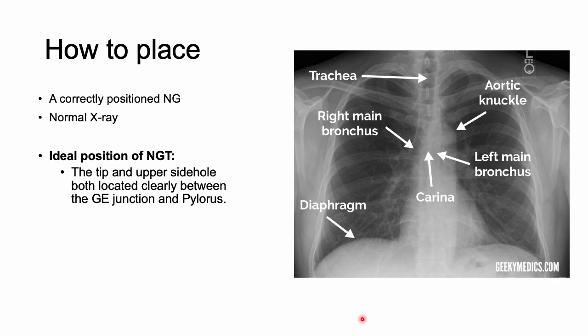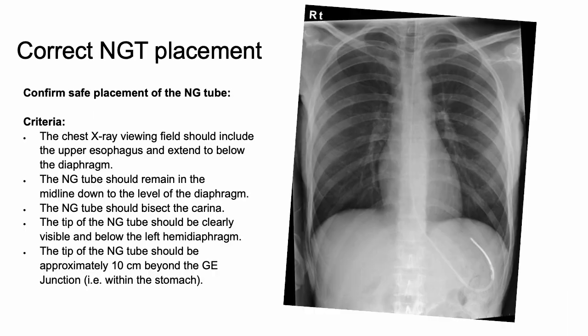You should always get a confirmatory x-ray when placing an NG tube. A correctly positioned NG will pass vertically down the esophagus and into the stomach. The esophagus is not visible on a plain chest x-ray, so it's essential to understand the different anatomic landmarks in relation to other visible structures. The ideal position has the tip and the upper side hole both located clearly between the GE junction and the pylorus.